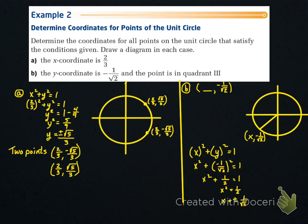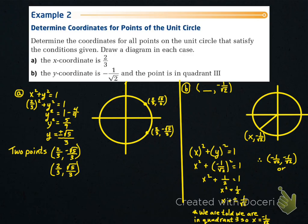So x = -1/√2, and our point is (-1/√2, -1/√2). However, we must rationalize the denominator by multiplying top and bottom by √2, giving us the point (-√2/2, -√2/2).